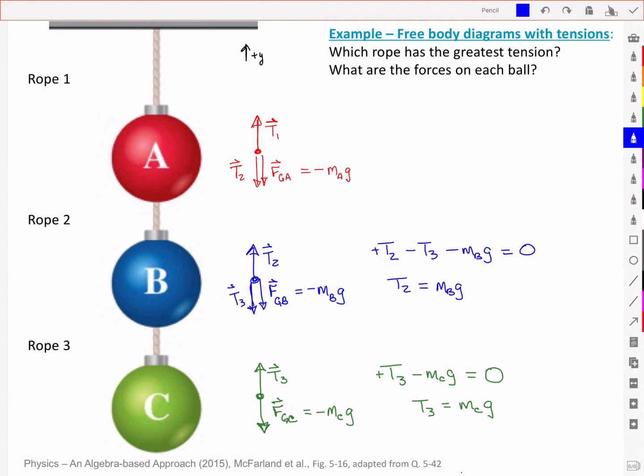It's equal to the weight of the green bauble. And so not surprising, tension T2 is supporting the weight of both of those baubles.